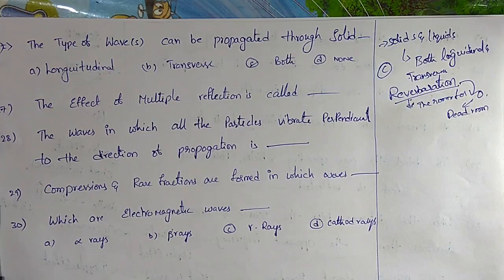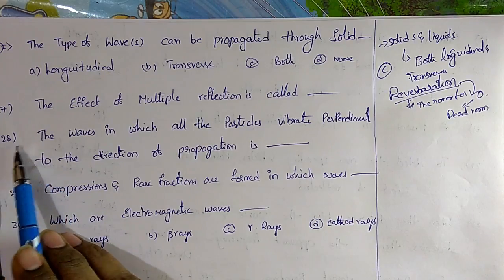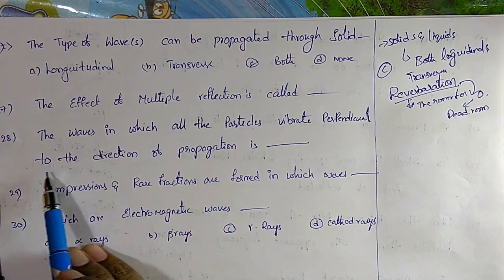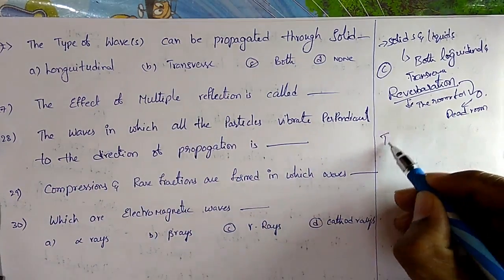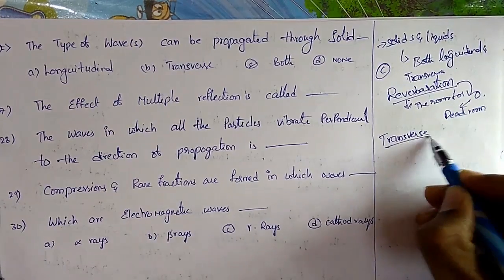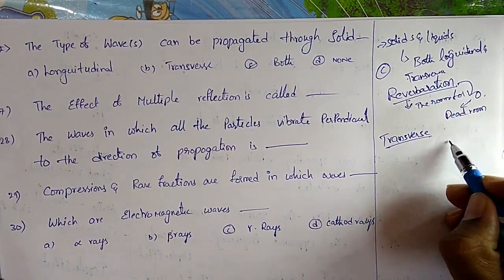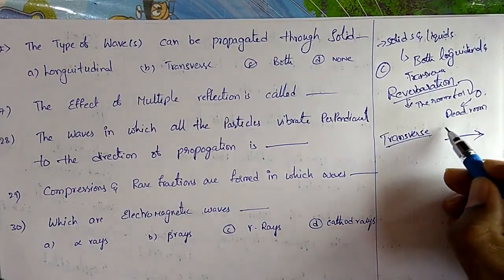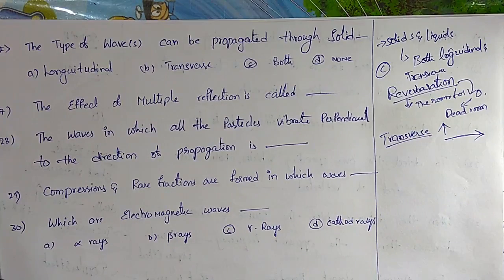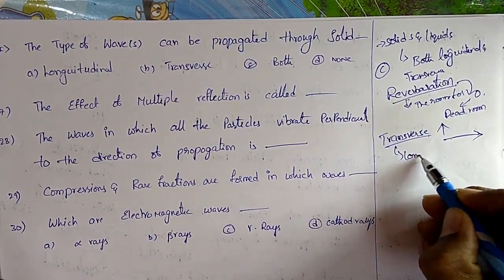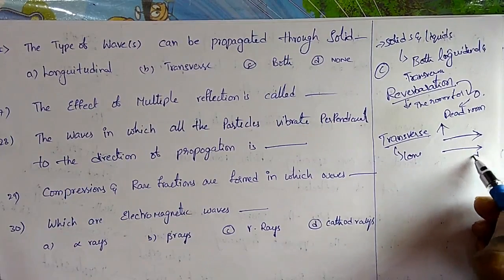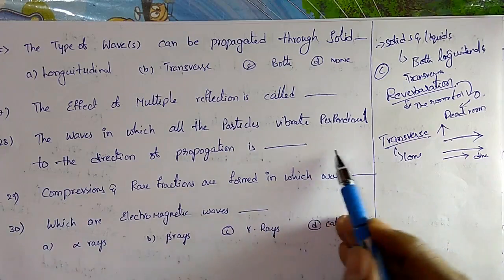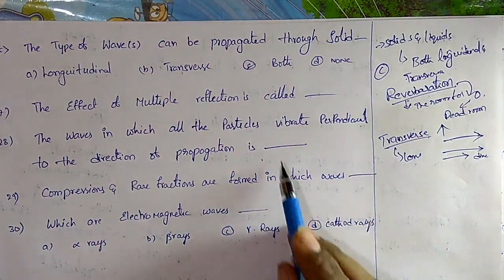Question 29: Waves in which all particles vibrate perpendicular to the direction of propagation are transverse waves. In transverse waves, particles vibrate perpendicular to the direction of wave propagation. In longitudinal waves, particles vibrate parallel to the direction of the wave.